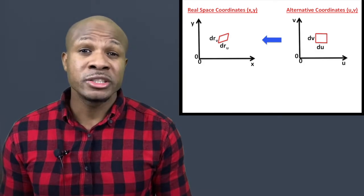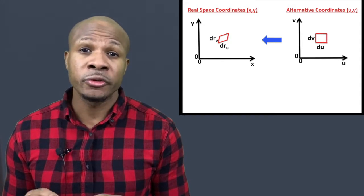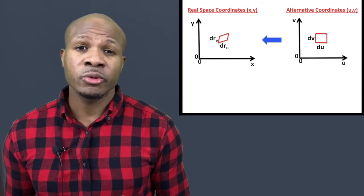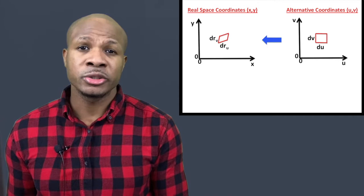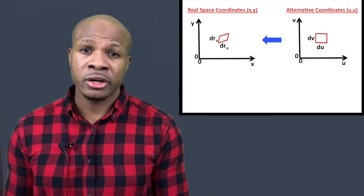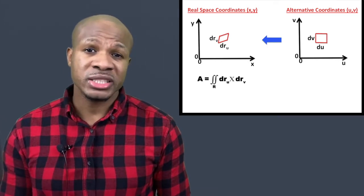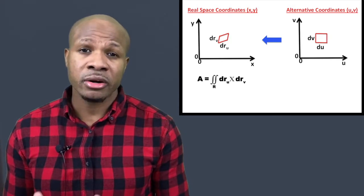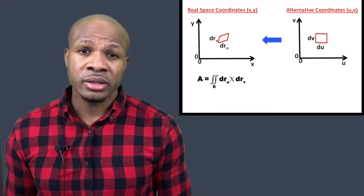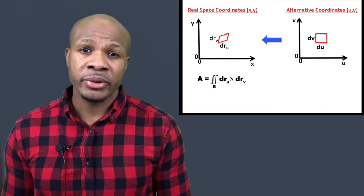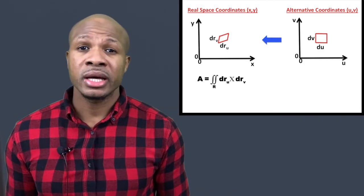To find the area over a certain region, you need to use the tiny real-space area. When we convert the area du·dv into real space, we get a parallelogram defined by dr_u cross dr_v. The cross product of dr_u and dr_v gives the area of that tiny parallelogram.